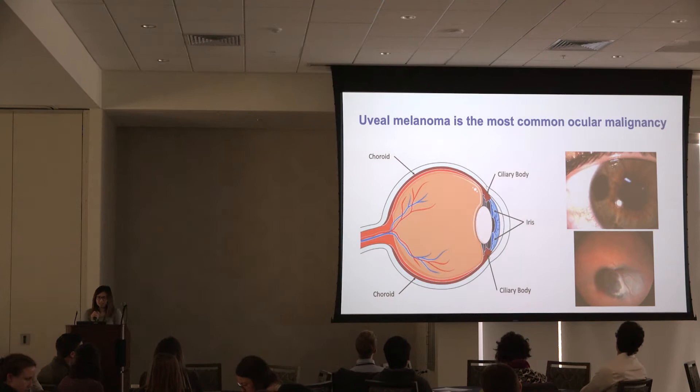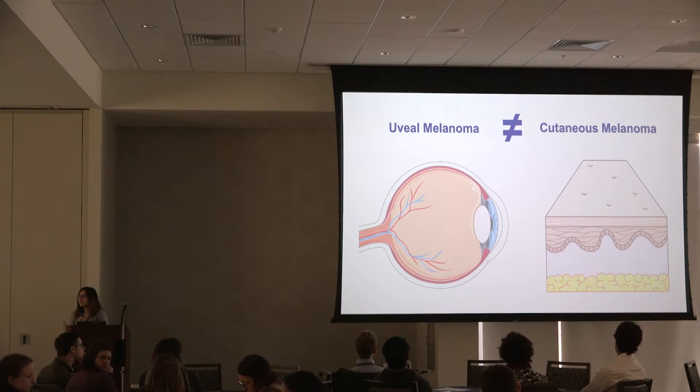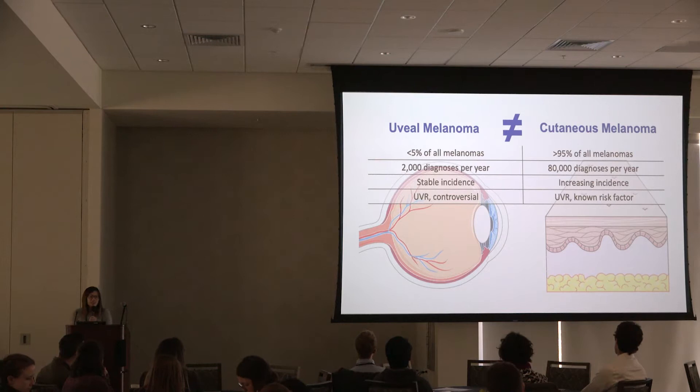Uveal melanoma occurs along the uveal tract of the eye, which consists of the choroid, ciliary body, and iris, and it is the most common ocular malignancy. When we typically think about melanoma, we think of melanoma that occurs on the skin, but uveal melanoma is actually very different from cutaneous melanoma in multiple ways.